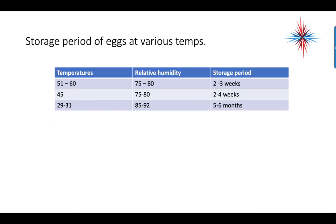Storage periods for eggs at various temperatures are as follows: 51 to 60 degrees with 75 to 80 percent relative humidity, 2 to 3 weeks; 45 degrees with 75 to 80 percent relative humidity, 2 to 4 weeks; 29 to 31 degrees with 85 to 92 percent relative humidity, 5 to 6 months.